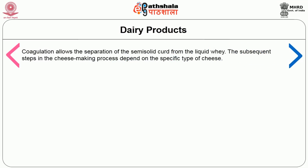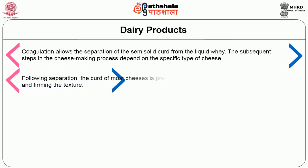Coagulation allows the separation of the semi-solid curd from the liquid whey. The subsequent steps in the cheese-making process depend on the specific type of cheese. Following separation, the curd of most cheeses is pressed and shaped, removing excess liquid and forming the texture. During the ripening process, salt is often added and flavor develops due to continuing microbial action on the protein and fat components of the cheese.